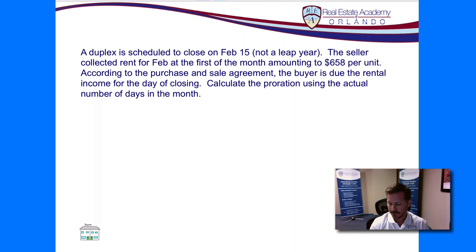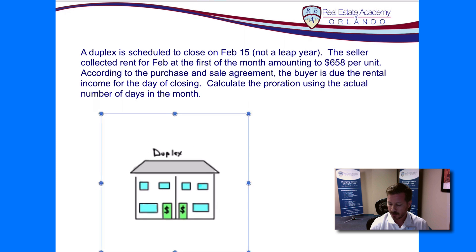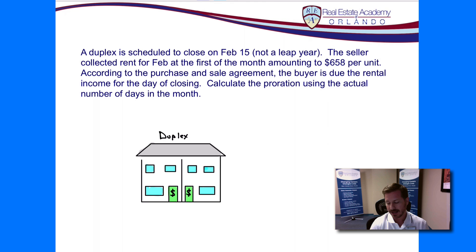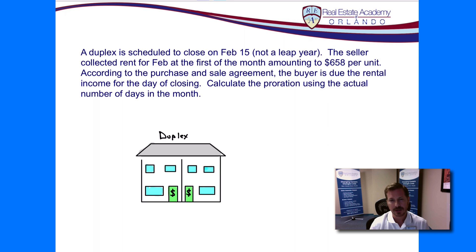One thing I want to point out before we go any further: this is one of those little tricks you're going to see a lot when it comes to multiple choice questions, state exam, or school tests. In this example, they're using the word duplex. If you don't know what a duplex is, that means there's more than one unit — two separate units in one building. So we're going to multiply the rent by two. You might also see triplex or quadruplex, so make sure you multiply the rent by the actual number of units. If you don't, one of the incorrect multiple choice answers will likely be half of what the correct answer should be.